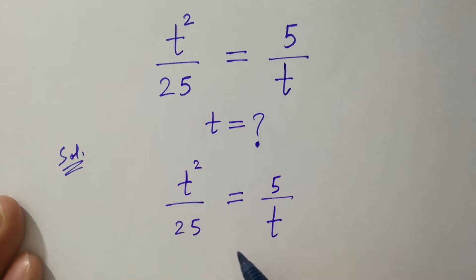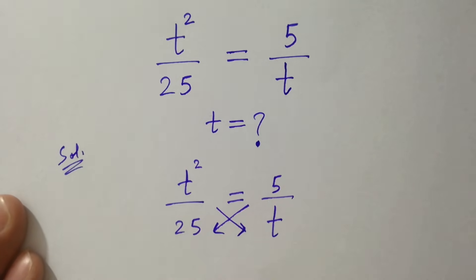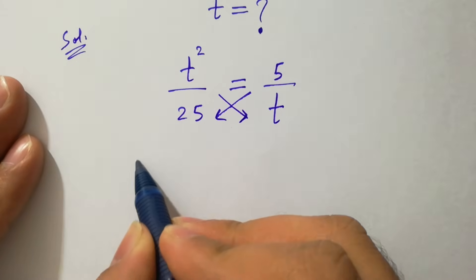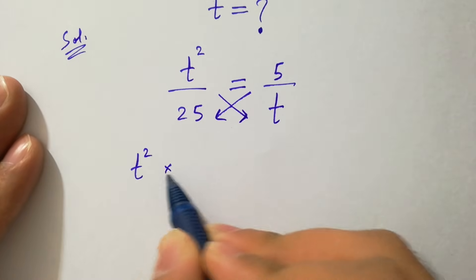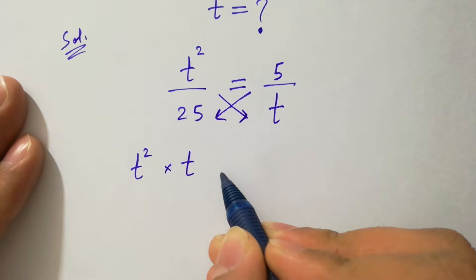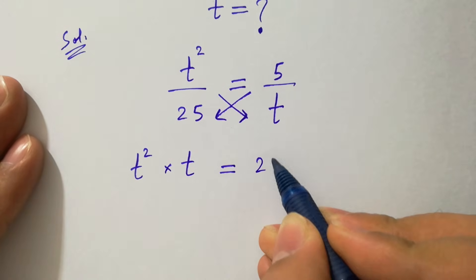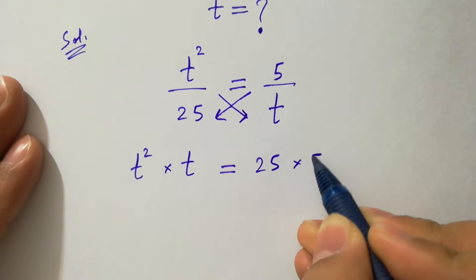This can be solved by cross multiplication. We have t squared times t equal to 25 times 5.